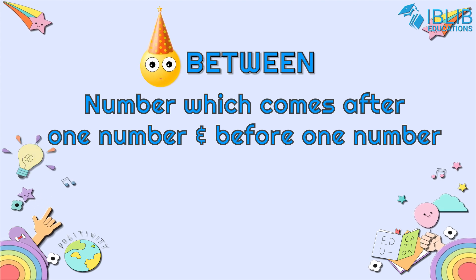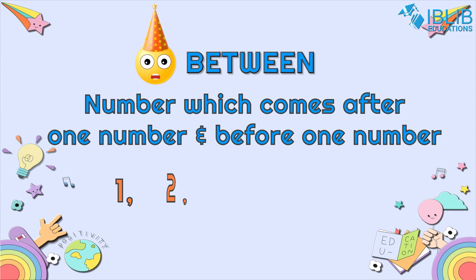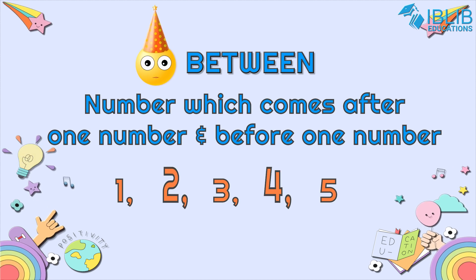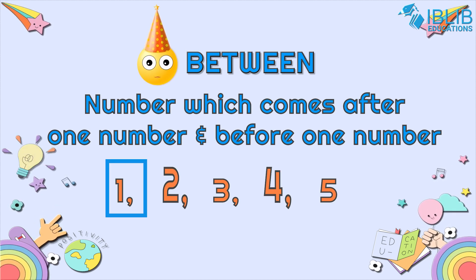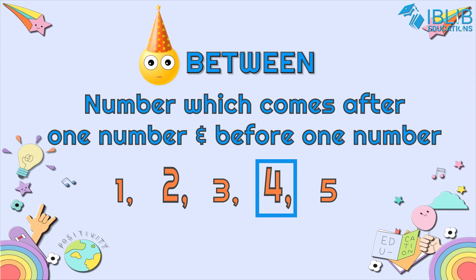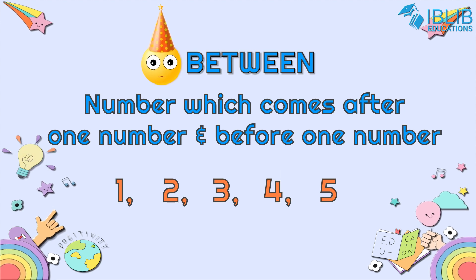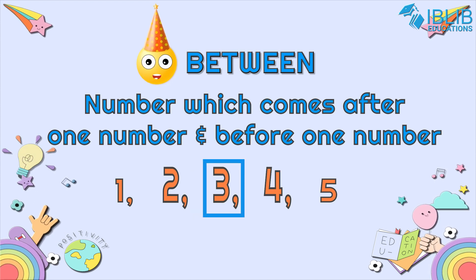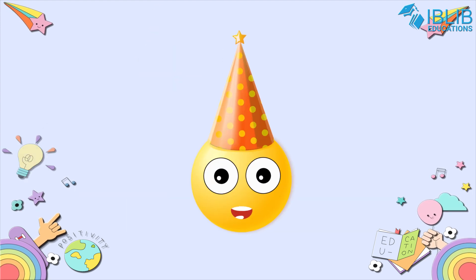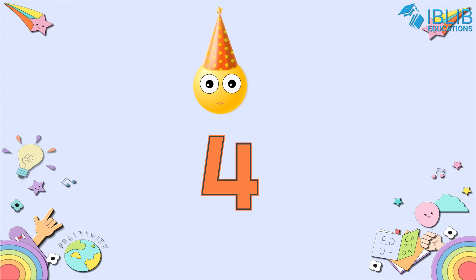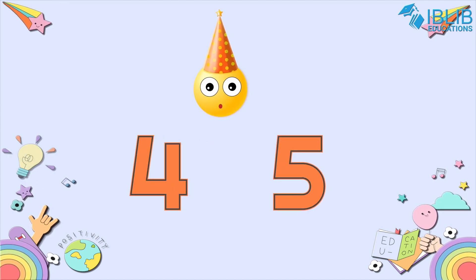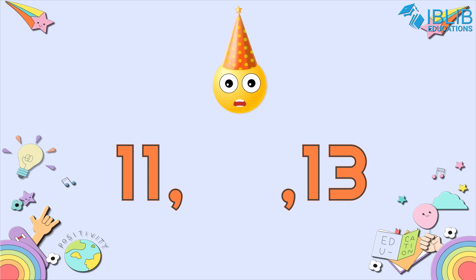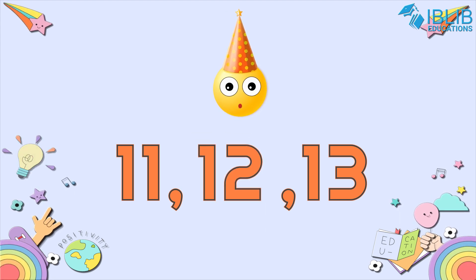The number which comes after one number and before another number is said to be between those two numbers. For example: 1, 2, 3, 4, 5 — what comes in between 2 and 4? It's 3! 3 comes in between 2 and 4. Thus 2, 3, 4. Now, what comes after 4? Yes, 5 comes after 4. 12 comes after 11 and before 13.